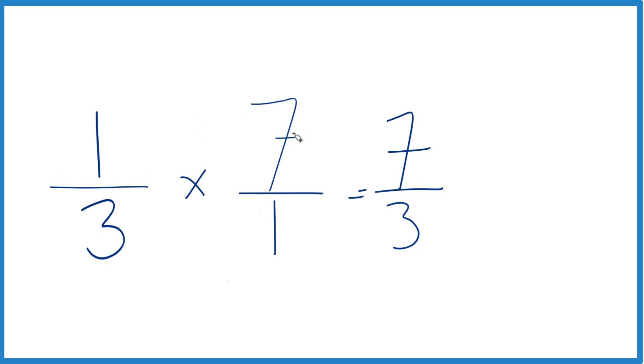So one-third of seven, or one-third times seven, is seven-thirds. This is an improper fraction in the numerator. It's larger than the denominator.